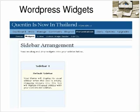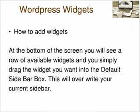So how do we add these widgets? At the bottom of the screen we just looked at you will see a row of available widgets. You simply drag the widget with your mouse to the default sidebar box.